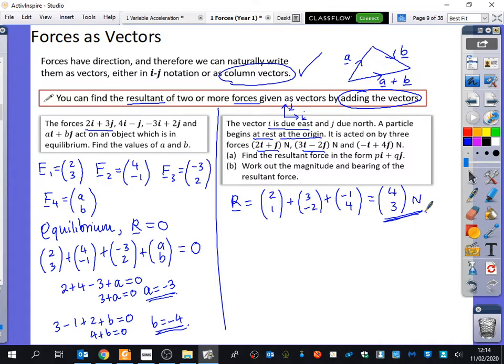This one's not in equilibrium because there is a resultant force. So if I was going to draw that force, well, we know it's going 4 across and it's going 3 up. So overall, the overall resultant force would be the magnitude of that, which is 3 squared plus 4 squared, which is 5. It then wants us to work out the bearing of the resultant force. This was the magnitude of the resultant force. So it's 5 newtons.